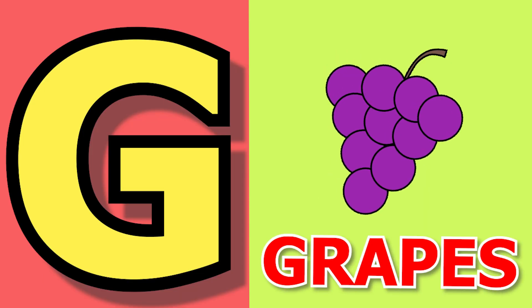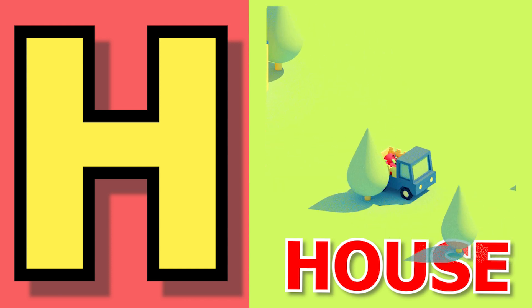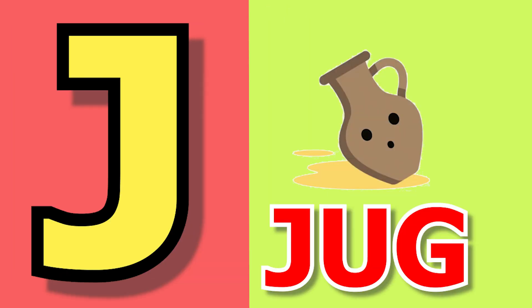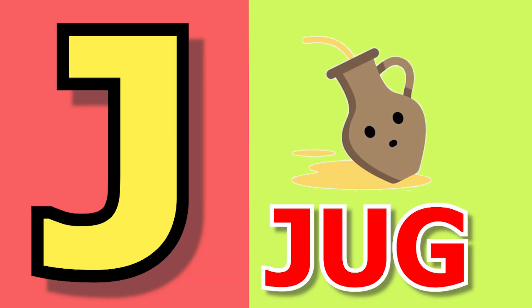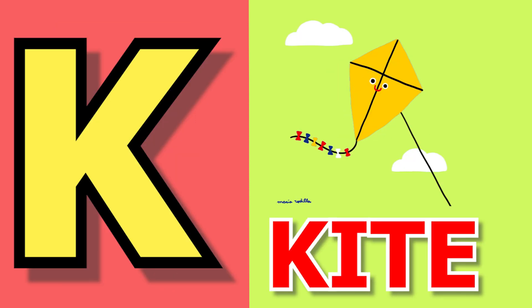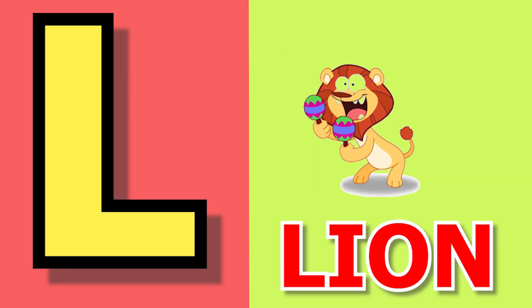G for grapes, H for house, I for ice cream, J for jug, K for kite, L for lion.